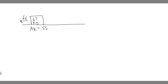In this problem, we're told you push a 67 kilogram box across a floor where the coefficient of kinetic friction is mu sub k equals 0.55. The force you exert is horizontal. Part A: how much power is needed to push the box at a speed of 0.5 meters per second? Part B: how much work do you do if you push the box for 35 seconds?